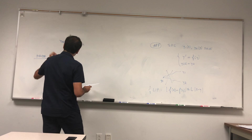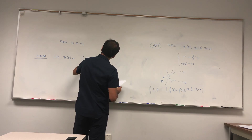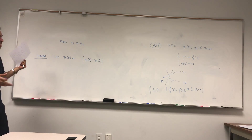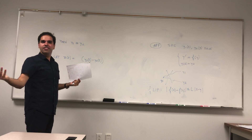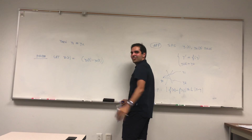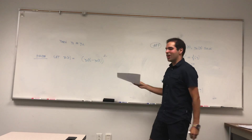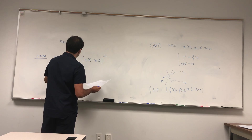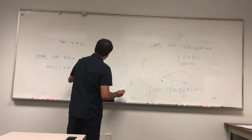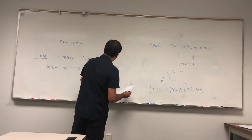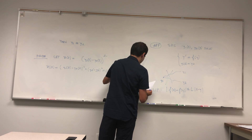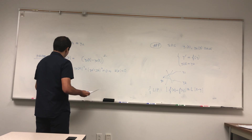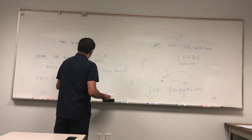Consider the helper function z(t) = (y₁(t) − y₂(t))². We square the difference so it's differentiable and always non-negative. At zero: z(0) = (y₁(0) − y₂(0))² = (y₀ − y₀)² = 0. So z(0) = 0.